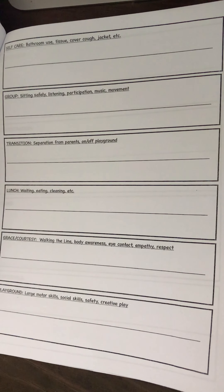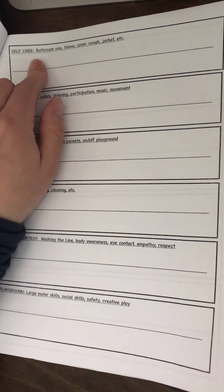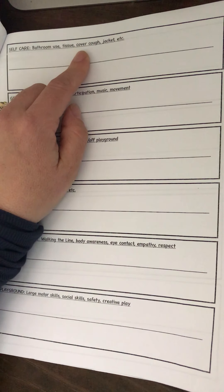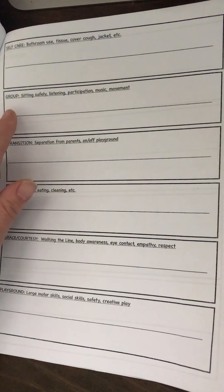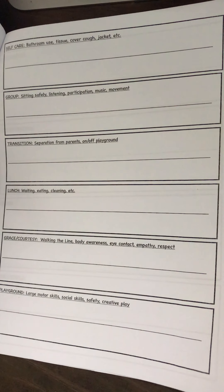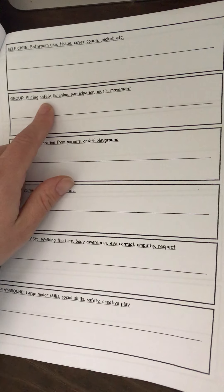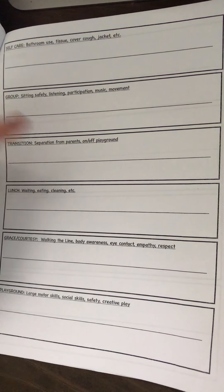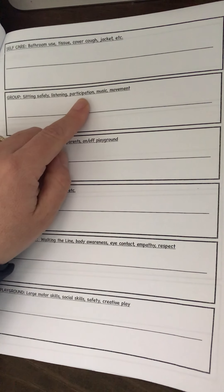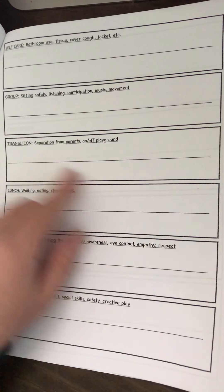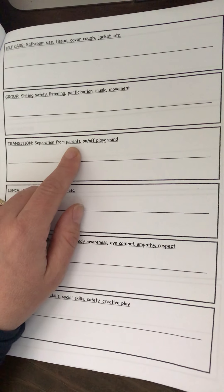Self-care: how did they use the bathroom? Can they properly use a tissue and then throw it away? Do they cover their cough? Can they put on their jacket? Group time, which doesn't make sense right now, but do they sit safely without being in other people's space? Are they good listeners? Do they participate? Do they participate in music? Do they do movement?